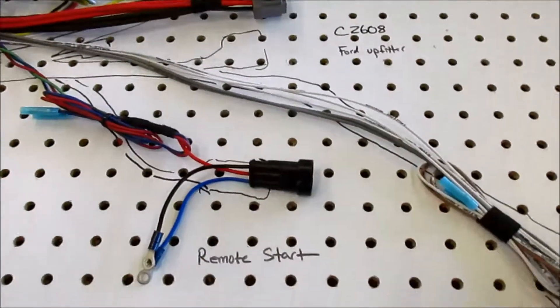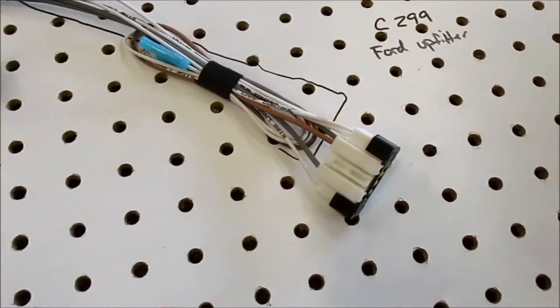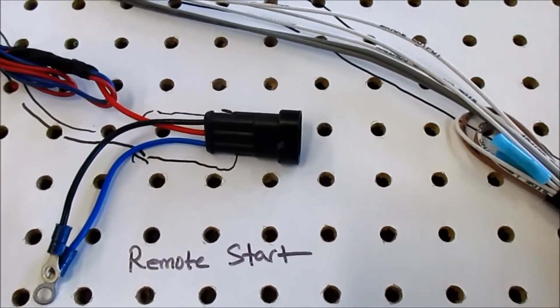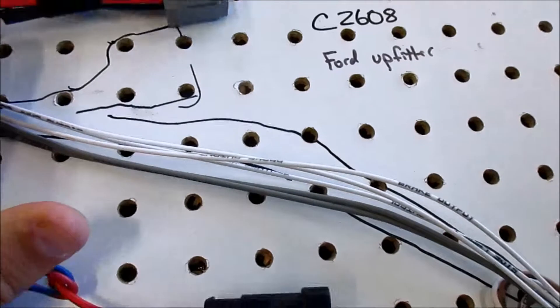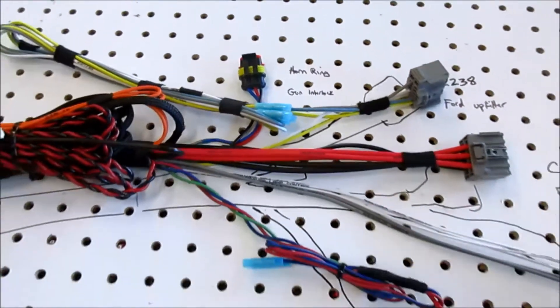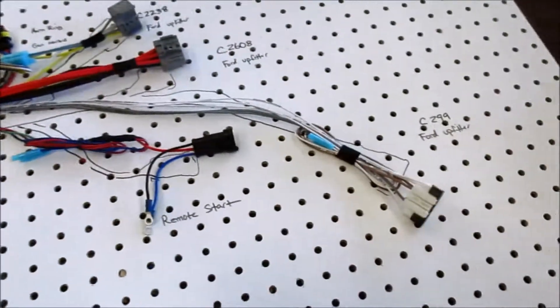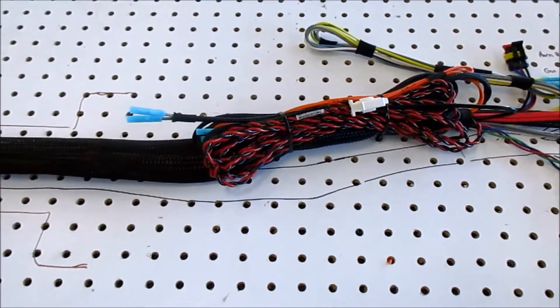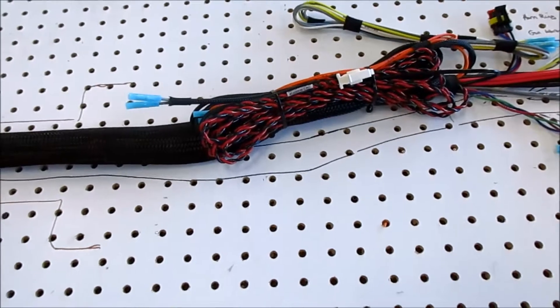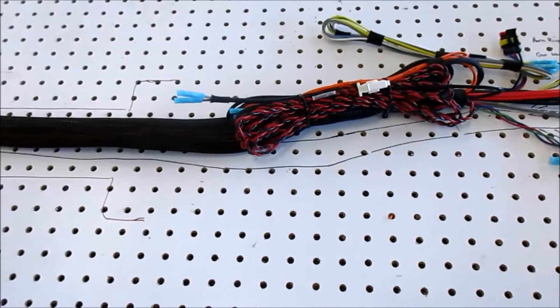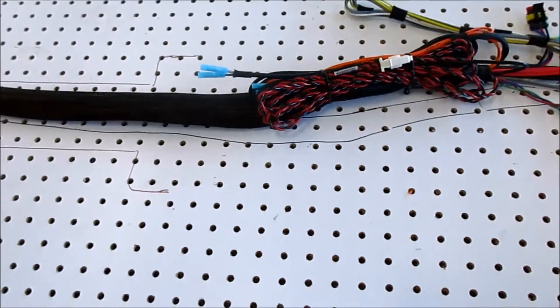You can see we've got everything separated. We've got our upfitter switches, our remote start plug and play, another Ford upfitter, we've got interlock relay. That's it. So now at this point we're ready to transition to the equipment tray and that's what we'll be doing next.